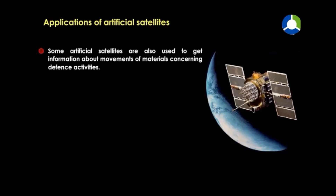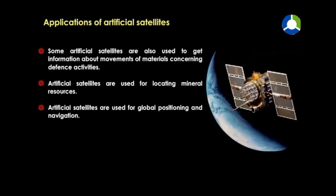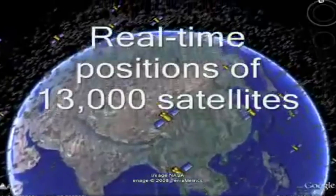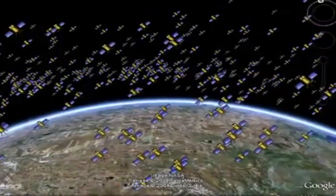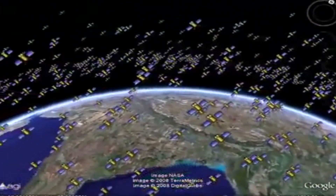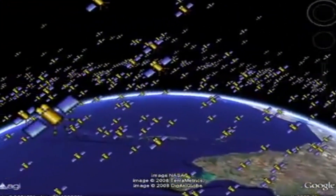Some artificial satellites are also used to get information about movements of materials concerning defense activities. Artificial satellites are used for locating mineral resources and for global positioning and navigation. Now let me show you the real time positions of around 13,000 artificial satellites revolving around the Earth.